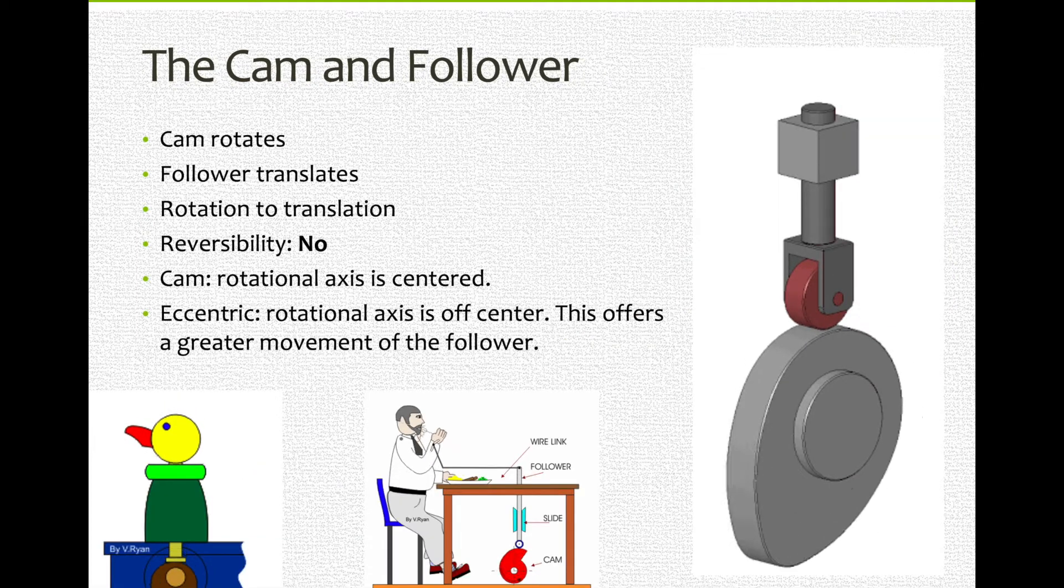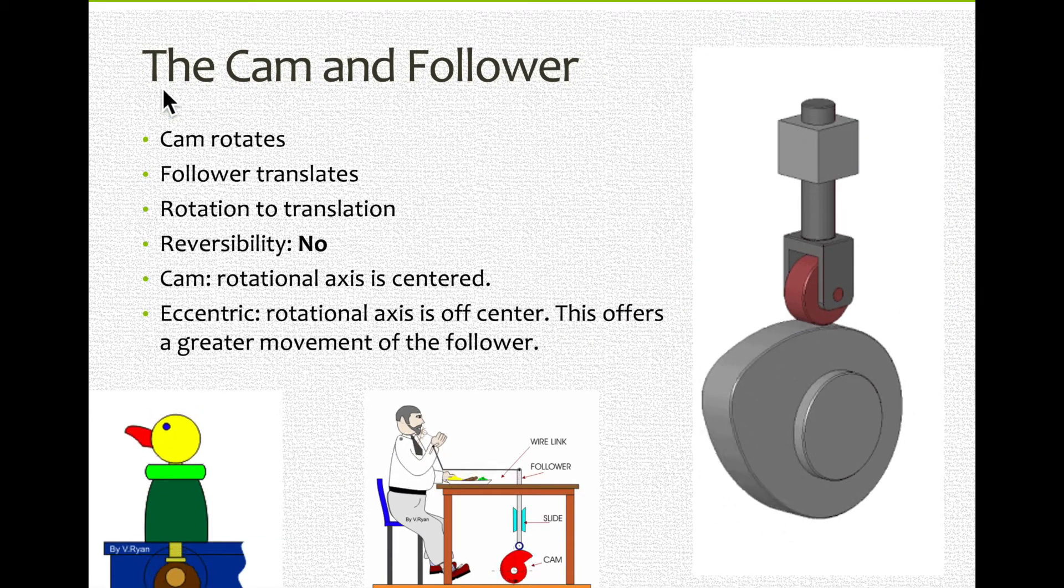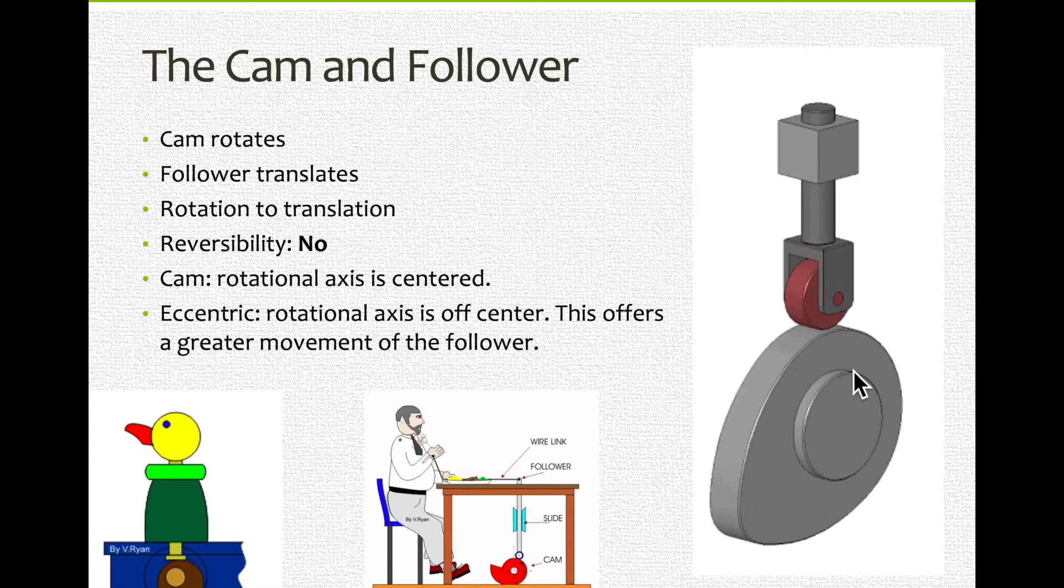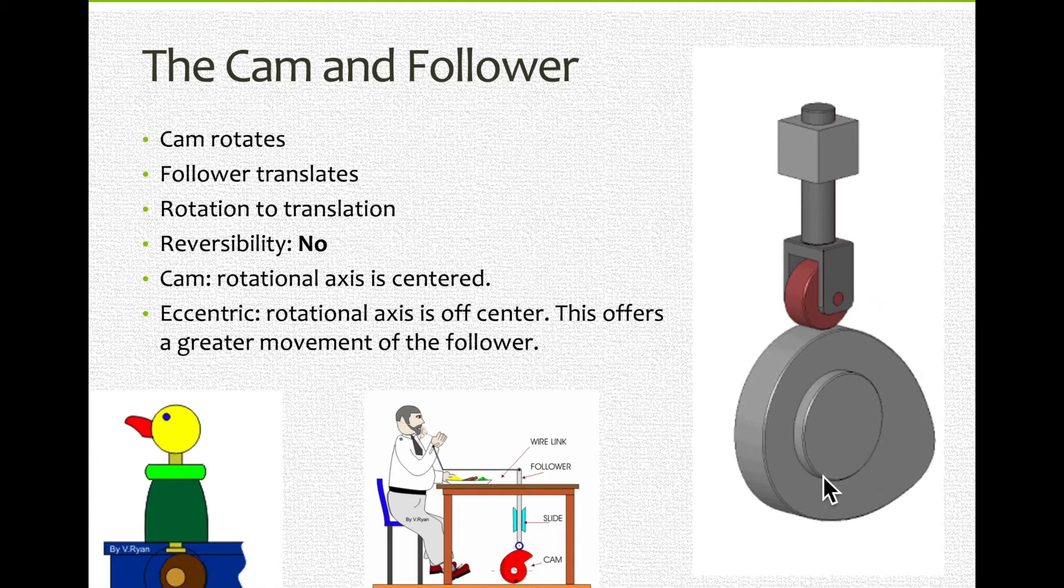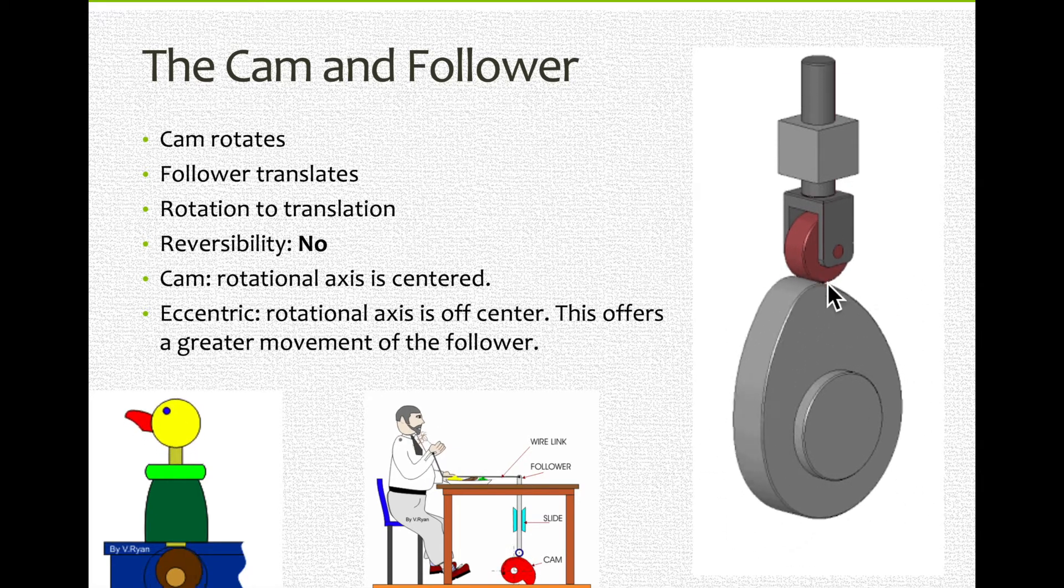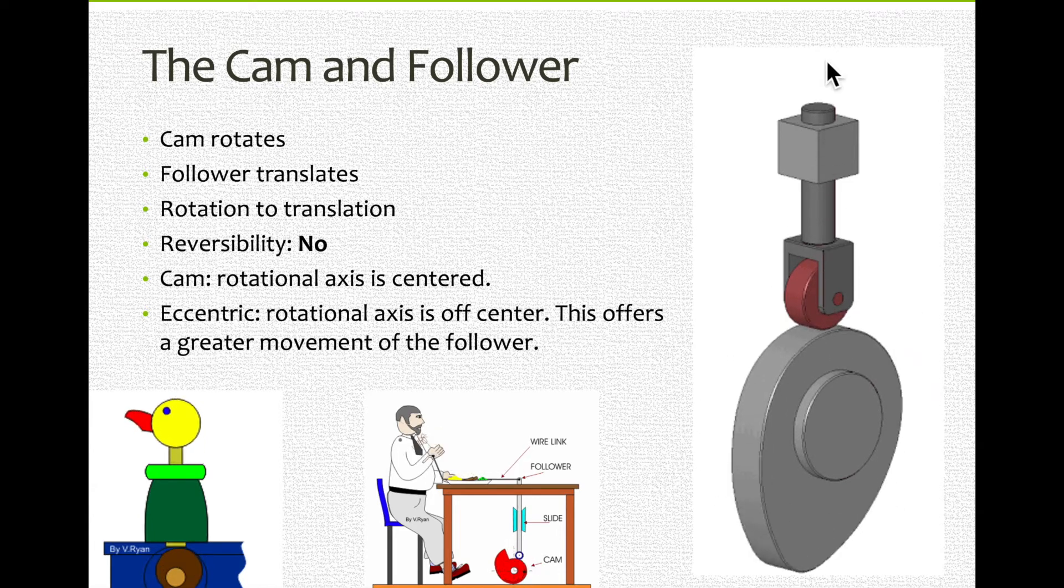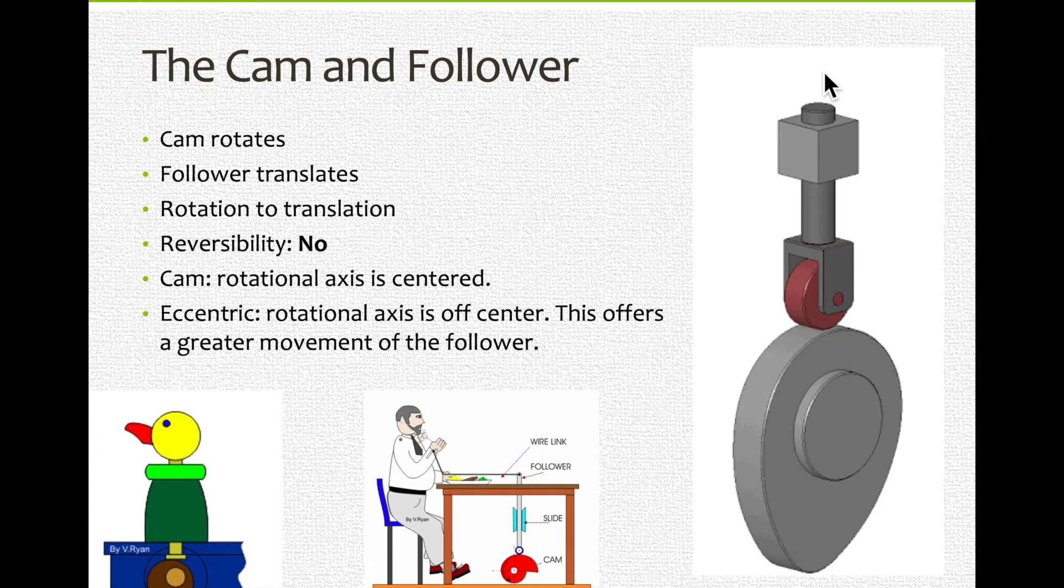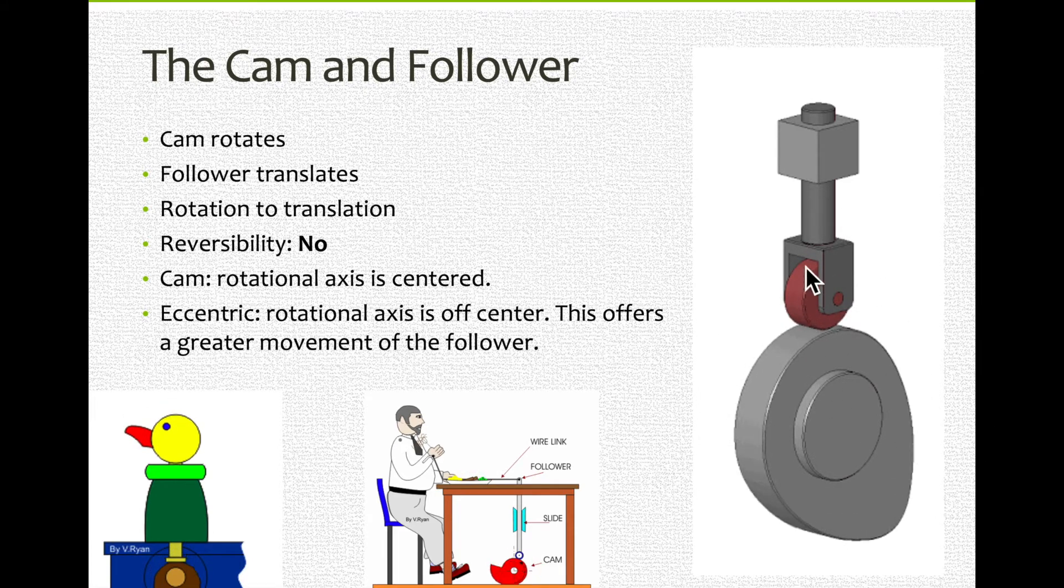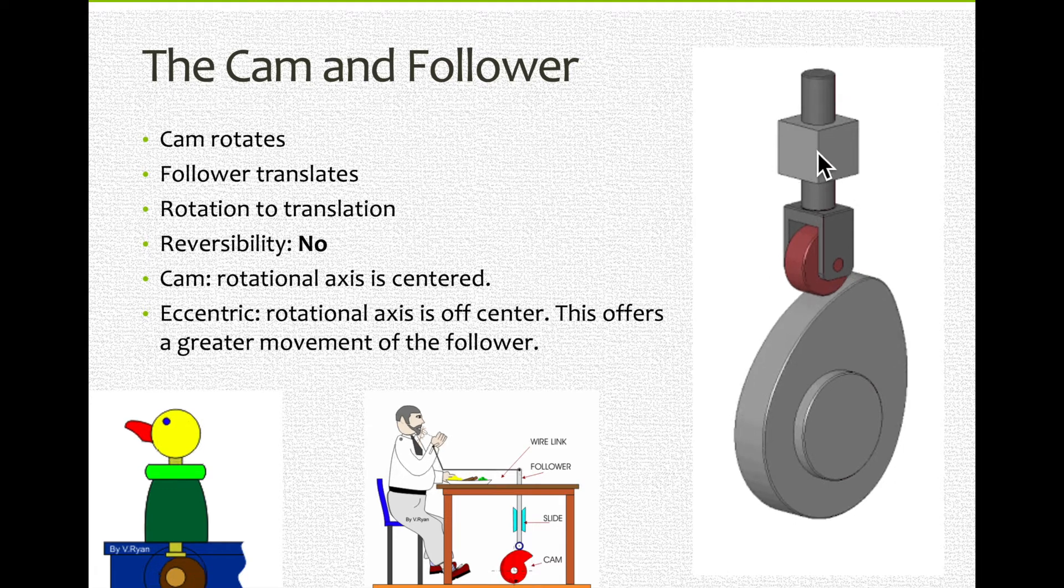The cam and follower. So the cam rotates. This is a cam. It rotates and because it has a shape like an egg, when the longer part reaches the top, it pushes this component up. So it makes this translate. So the follower, this component, translates. Can it be reversible? No. The cam is always the driver and the follower, it follows, is always the driven.